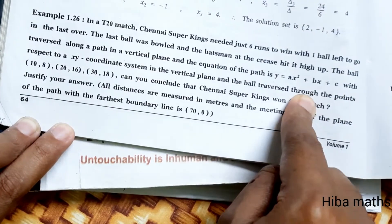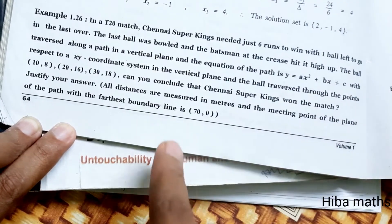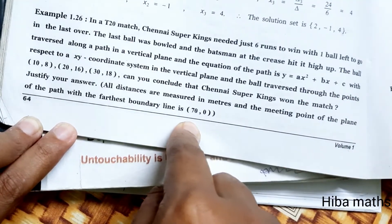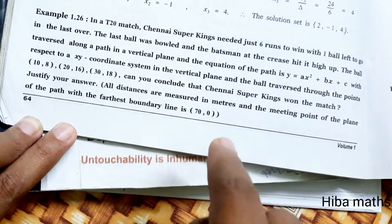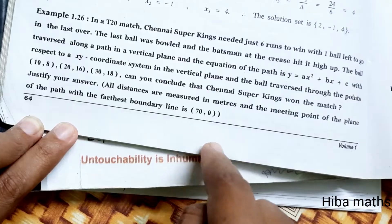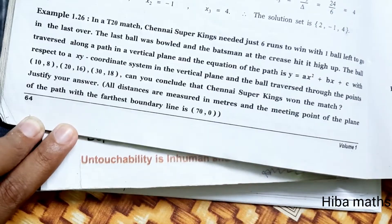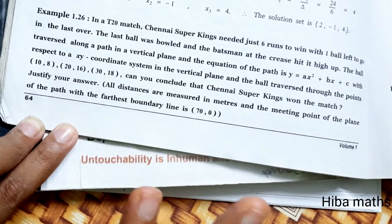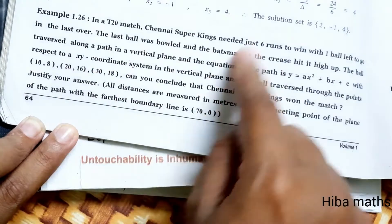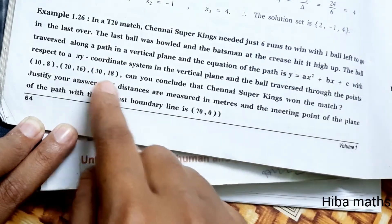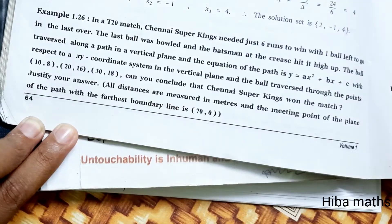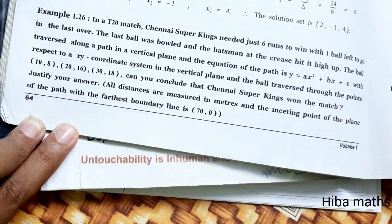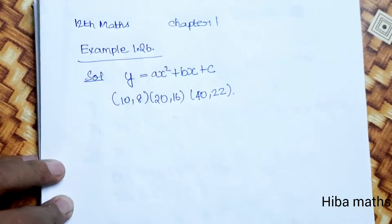When we get the values of a, b, and c, we will substitute x = 70 to get the y value. We will solve the problem. So if we have to explain the equation, we will solve the equation on paper.